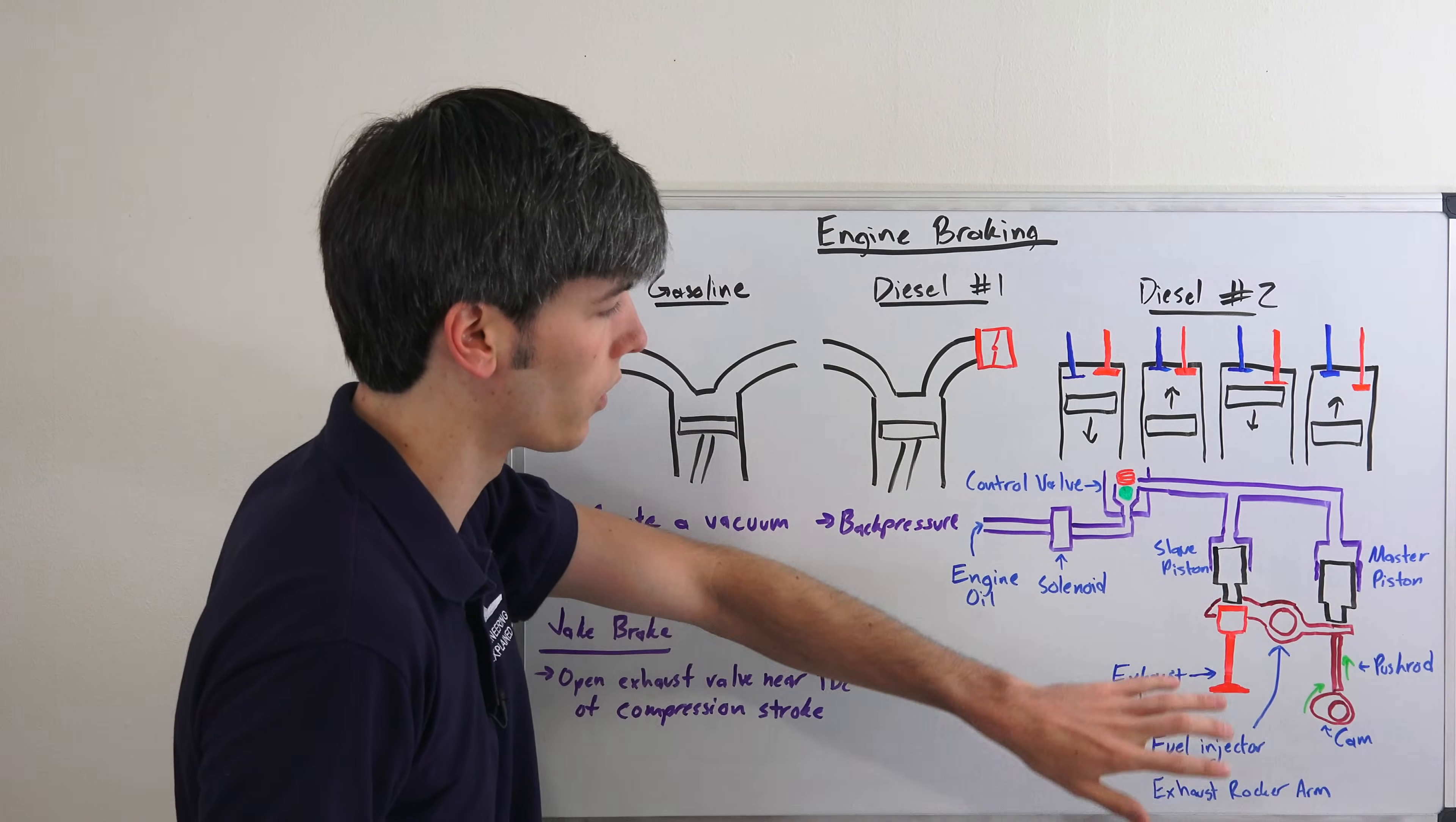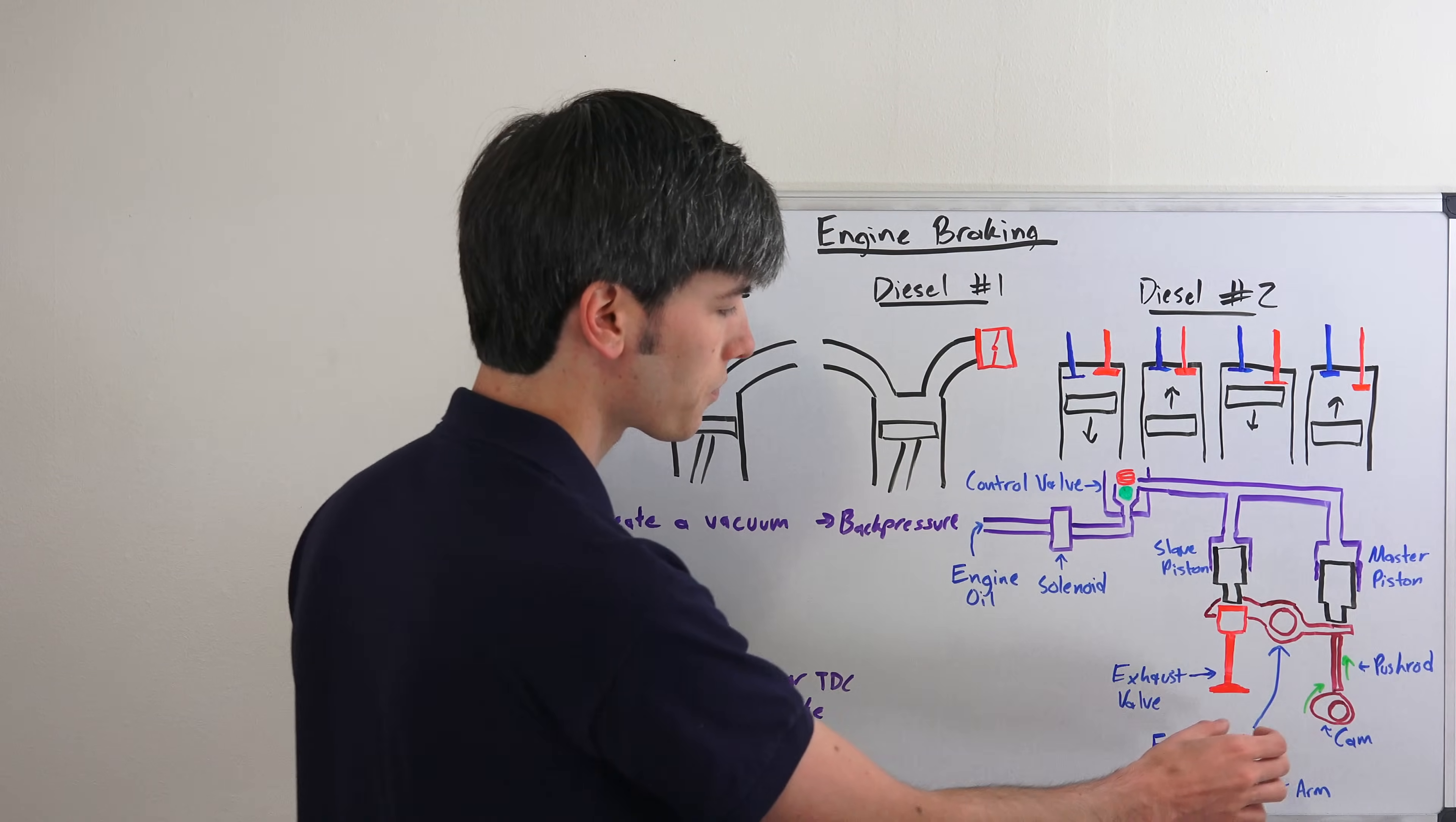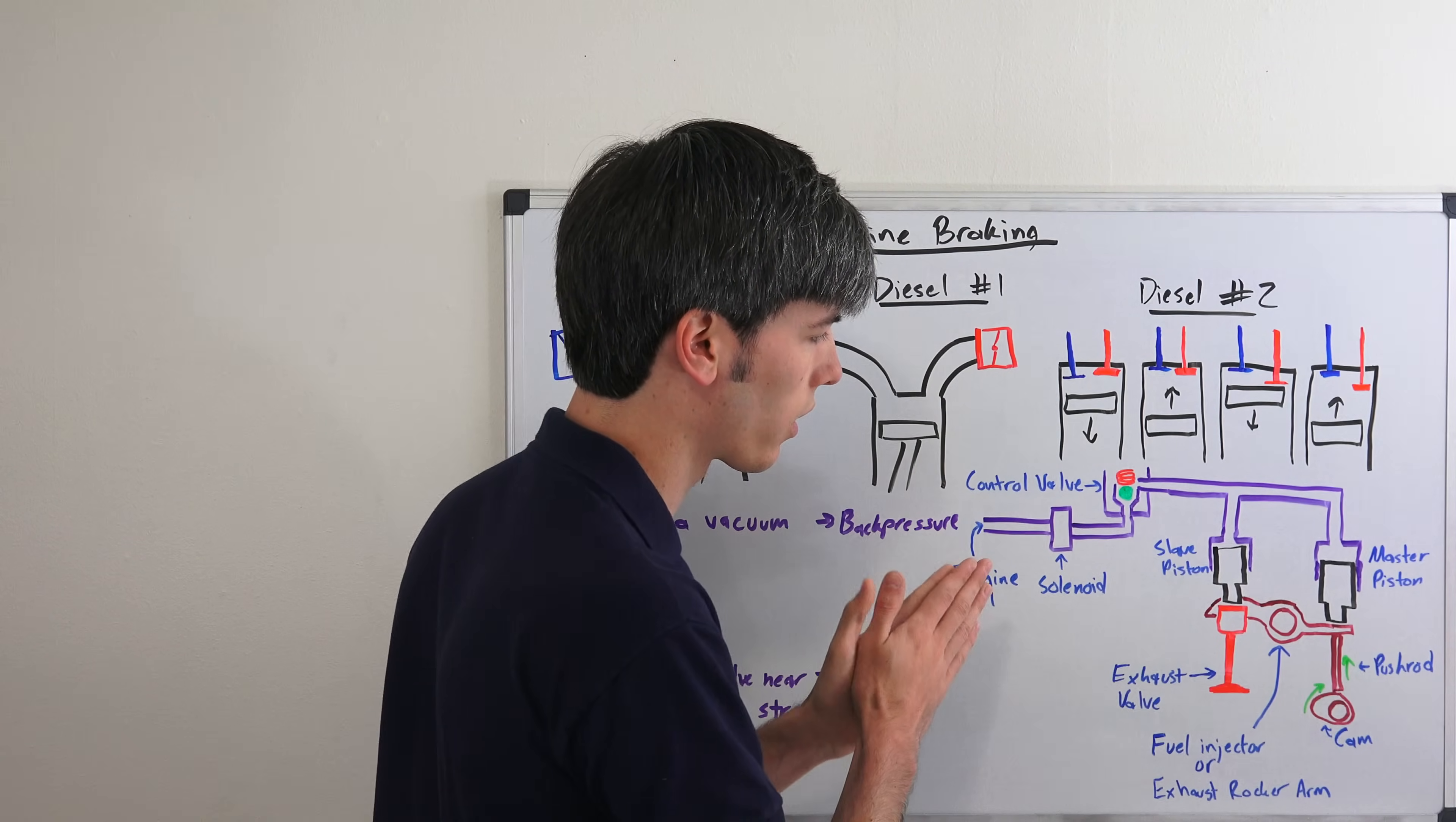Now this rocker arm is going to be either used for the fuel injector which you can have on diesel systems or the exhaust valve rocker arm for another cylinder. Now the reason you would do it for the fuel injector for this cylinder is because that will time it so that when it's close to top dead center, it will activate that rocker arm and that's what we need in order for this system to work.